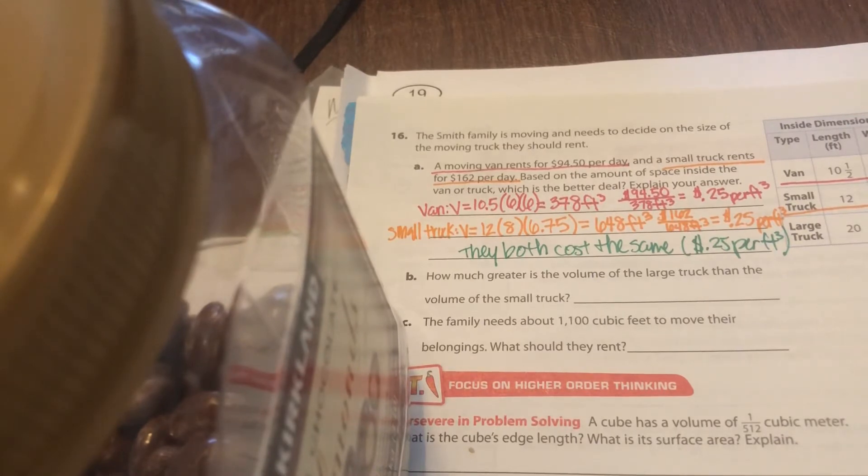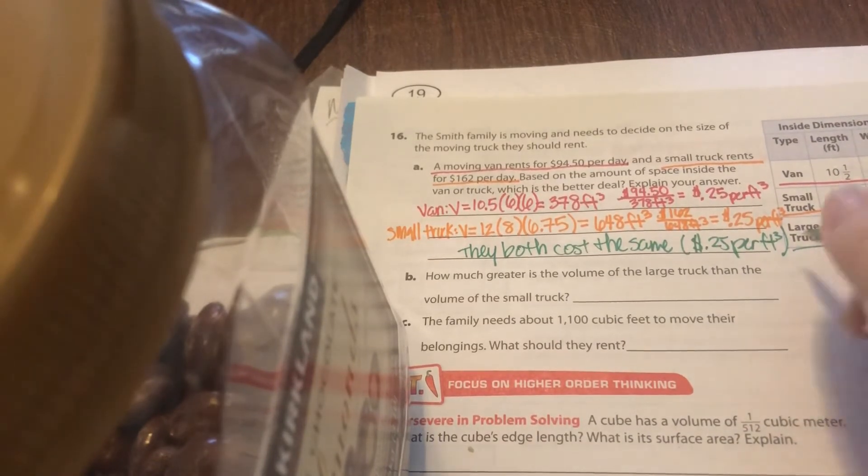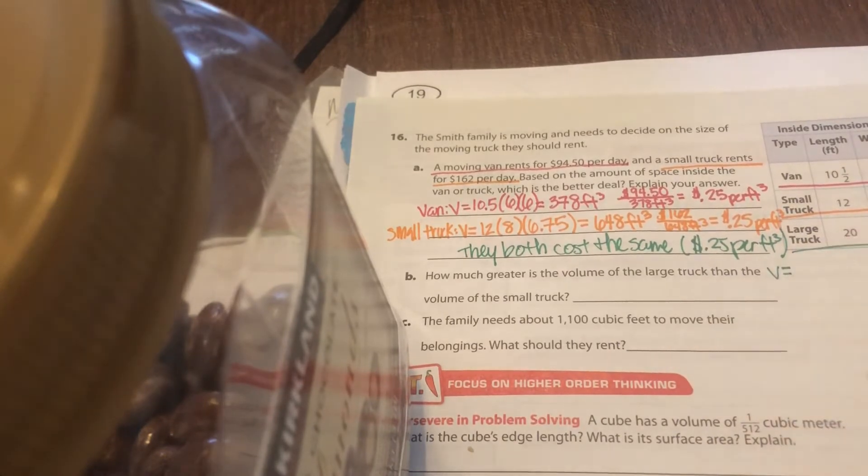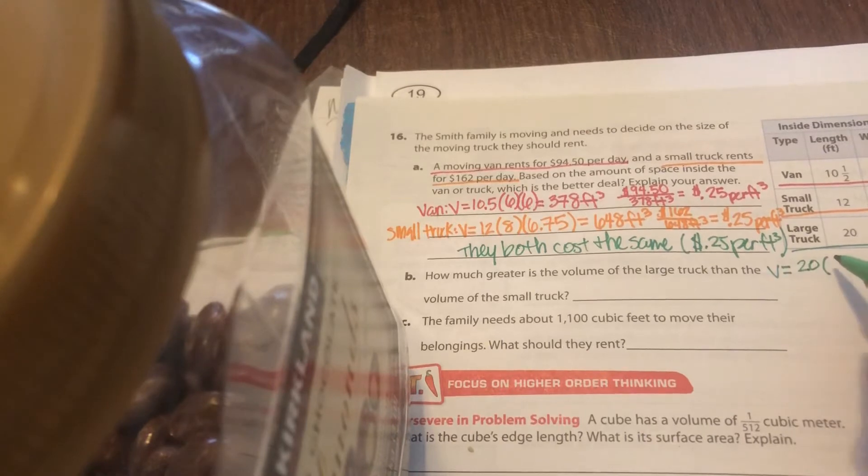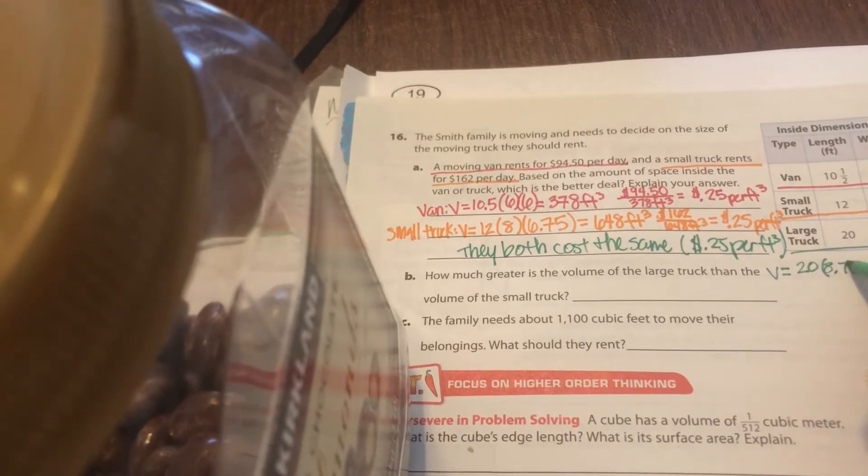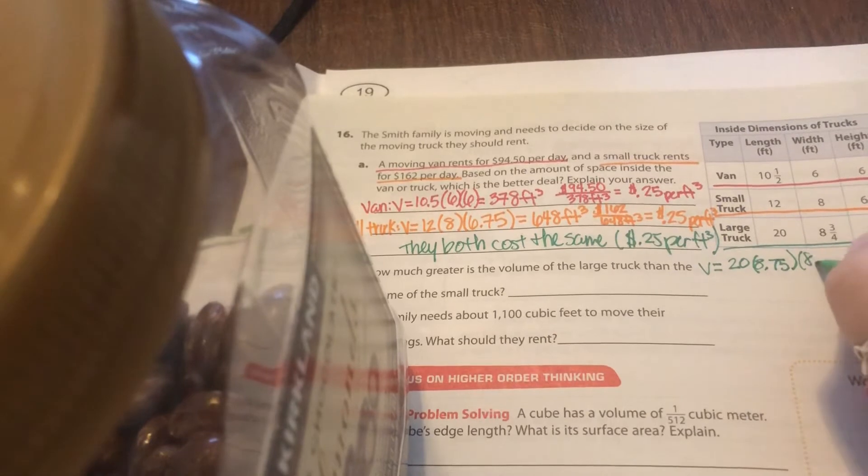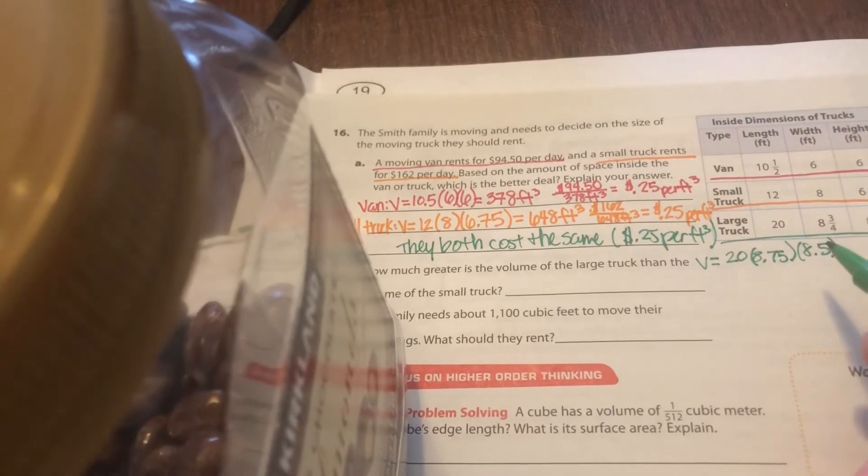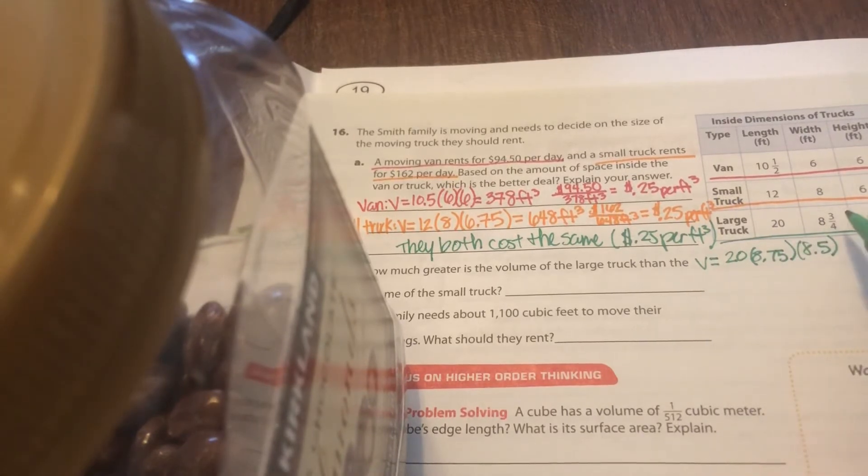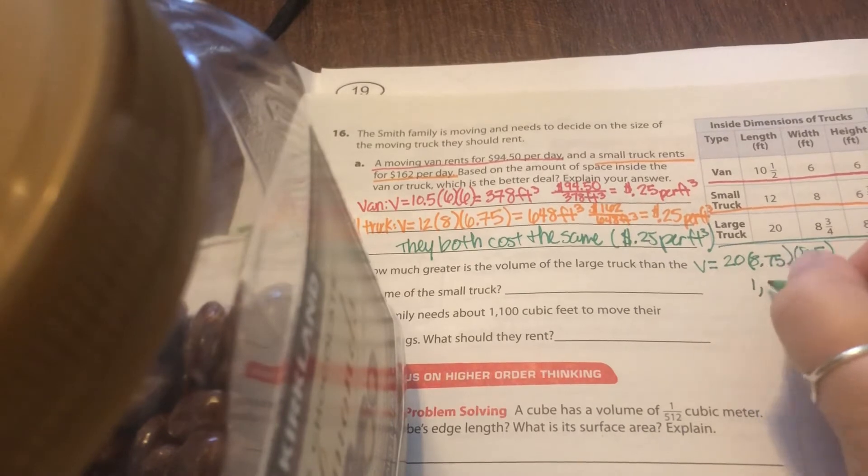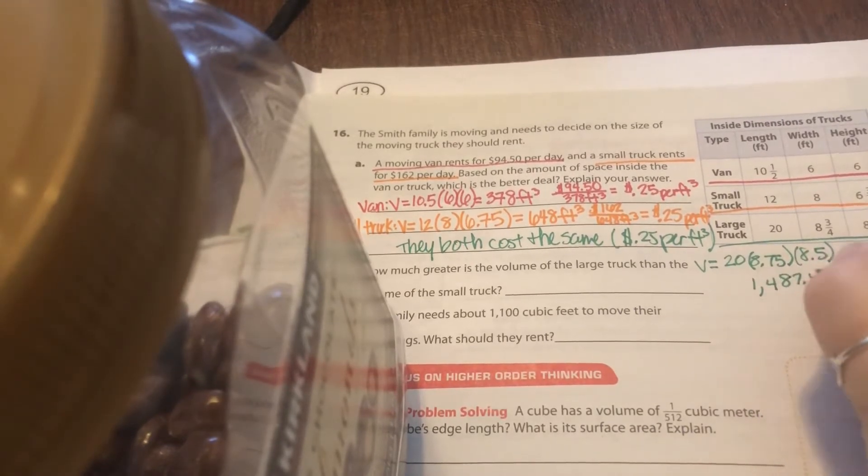Okay. Now for the next one, it says how much greater, how much greater, that's an indicator that you should subtract. Okay. Is the volume of a large truck than the volume of the small truck. So I need to find the volume of the large truck. Okay. So the volume of the large truck is 20 times eight and three fourths, which is 8.75. And I'm going to have to move this over a little bit, times eight and a half.